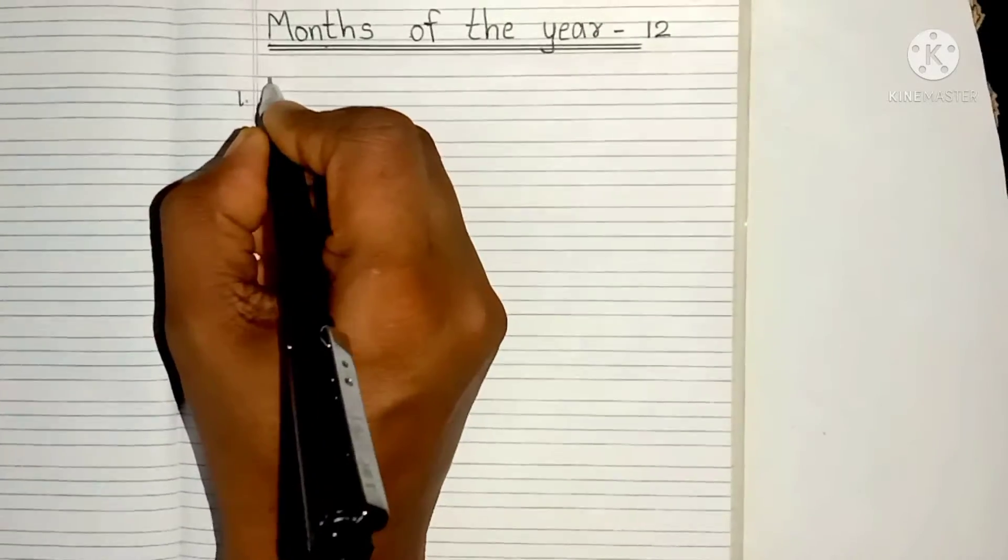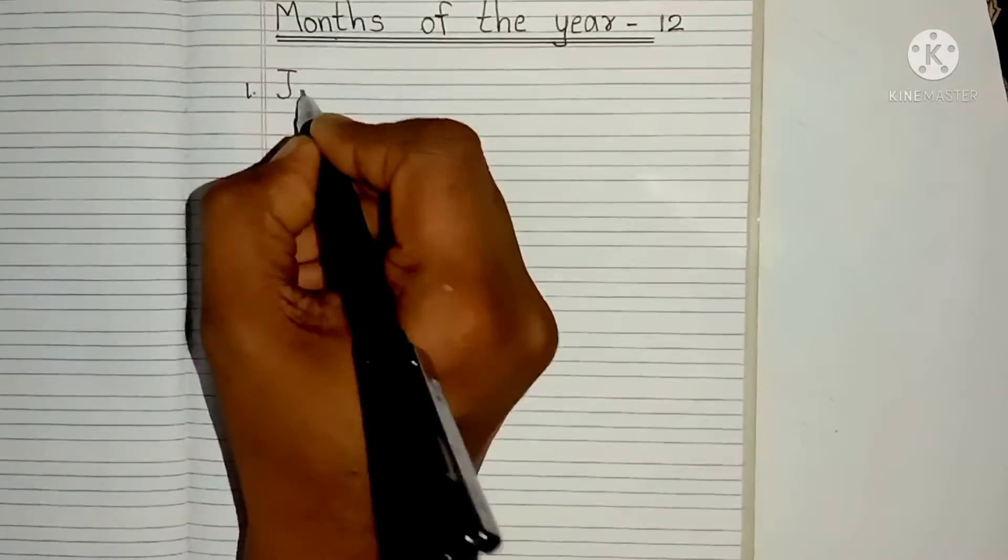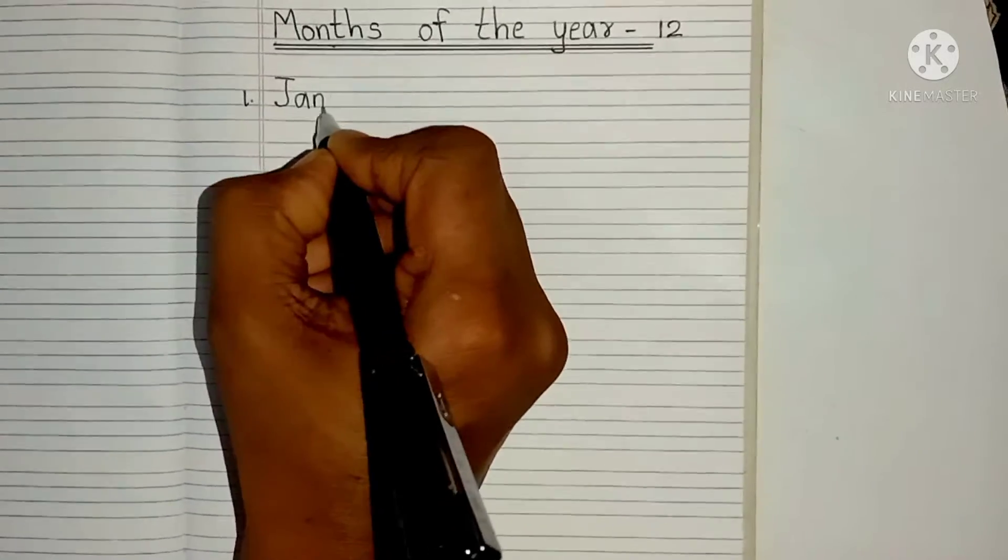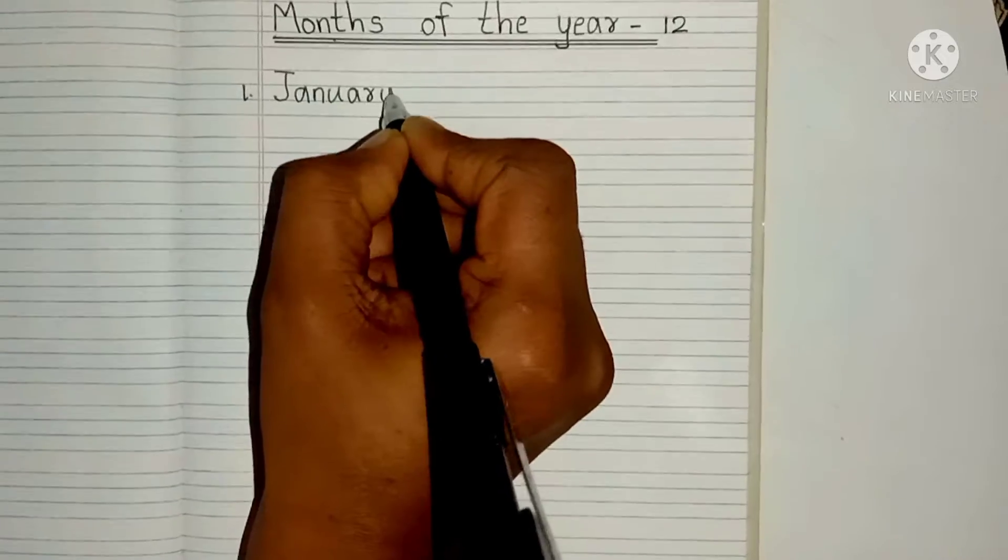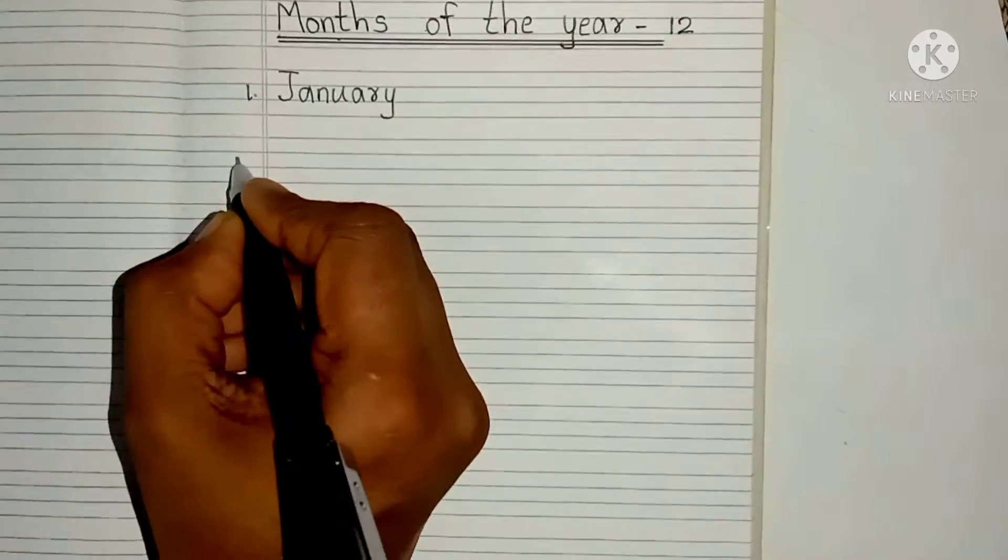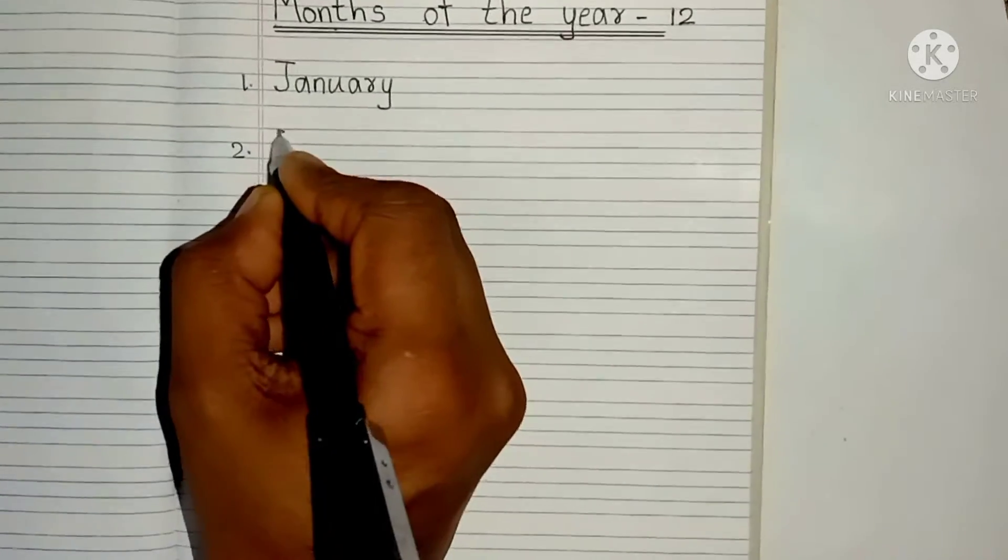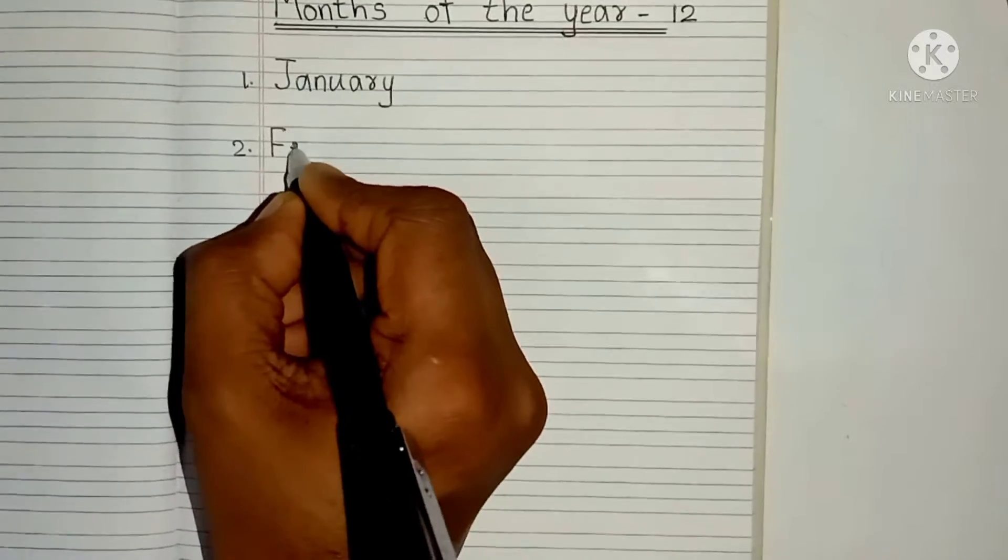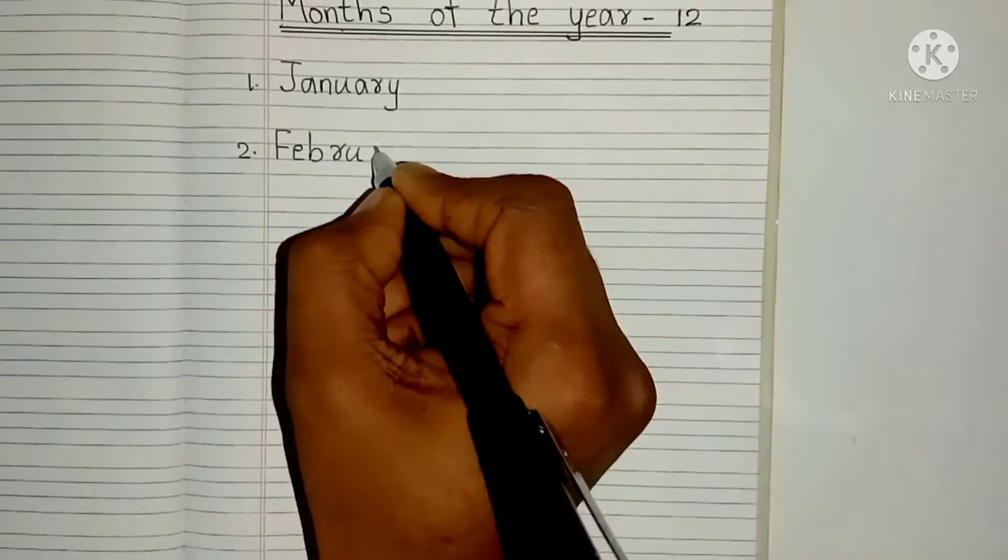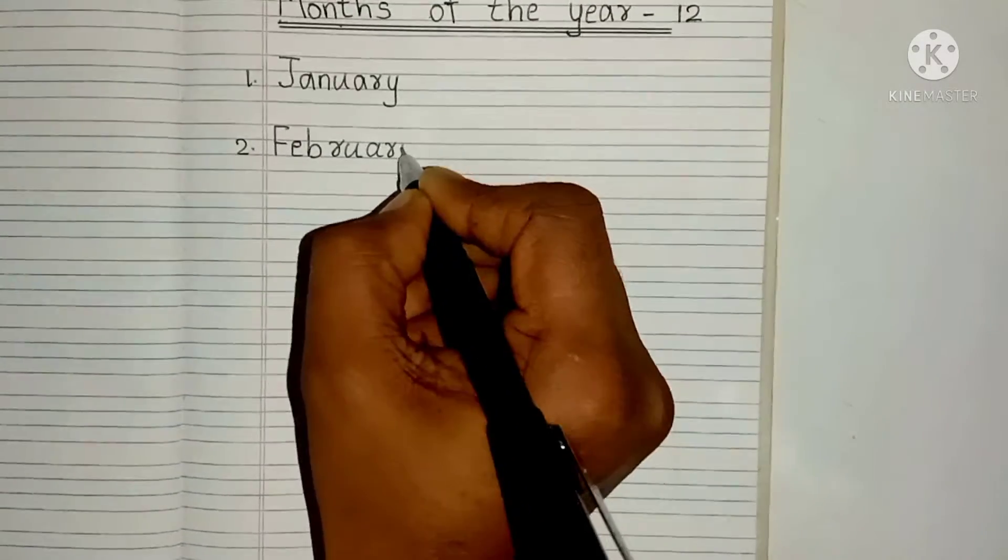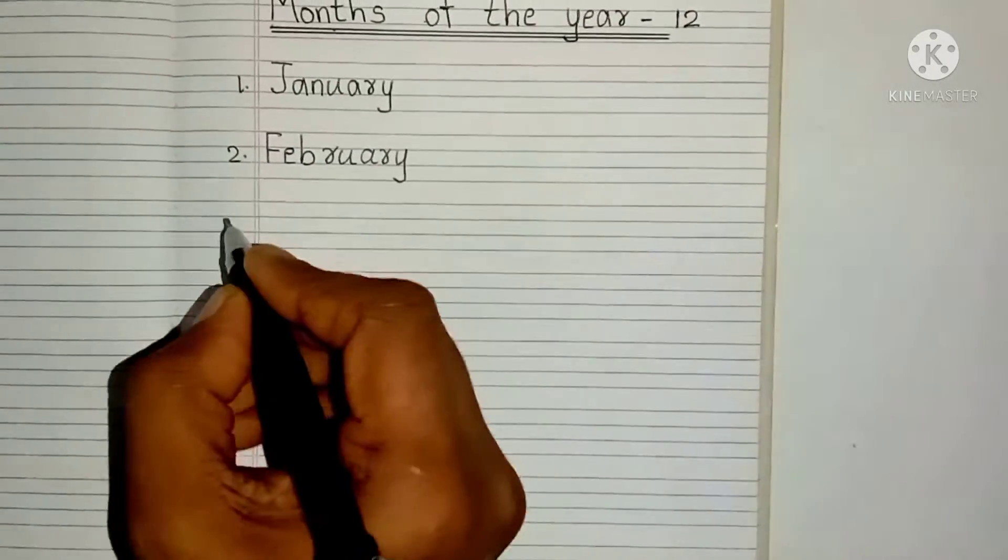First month is J, A, N, U, A, R, Y. January. Second month is F, E, B, R, U, A, R, Y. February.